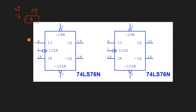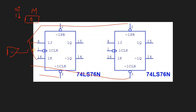For the JK flip-flop, we connect J, K, clear, and preset all to VCC. The important connection is for the clock. For an up counter we connect Q directly to the next clock, but for a down counter we connect Q-bar to the next clock. In both cases Q is the output connected to the LED or seven segment display.